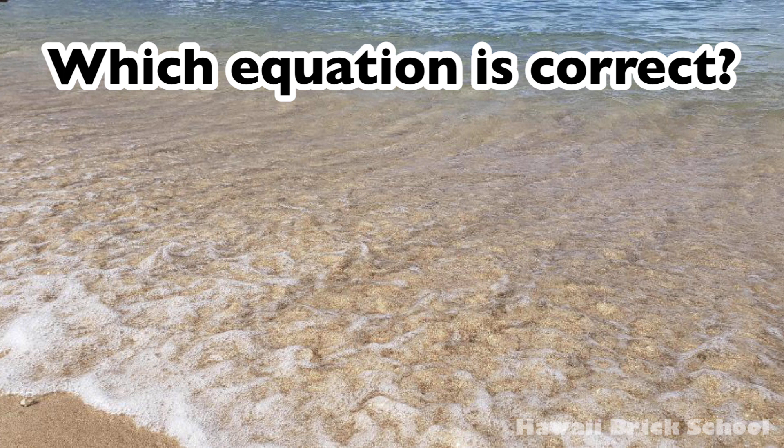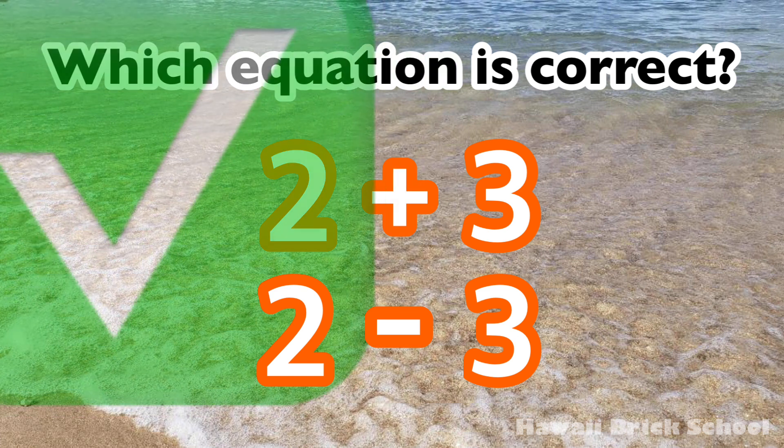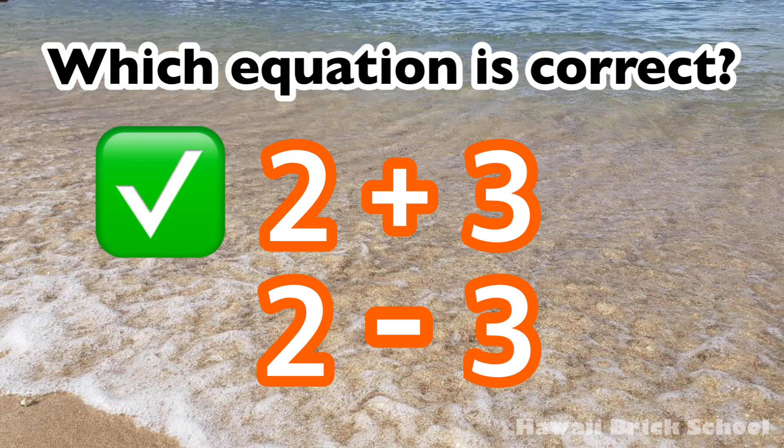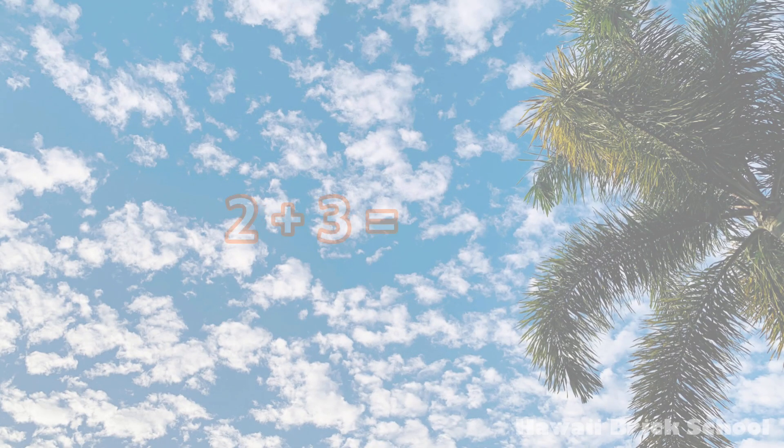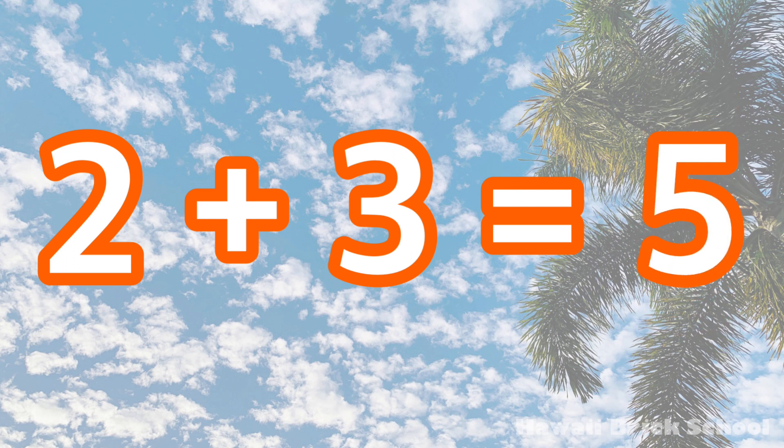Which equation is correct? 2 plus 3 or 2 minus 3? The correct equation is 2 plus 3. 2 plus 3 is 5.